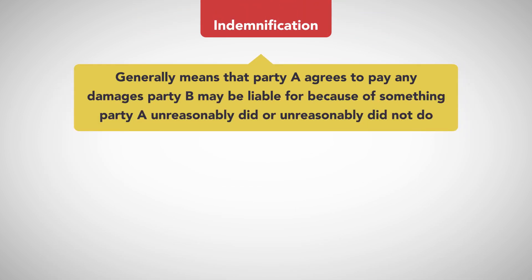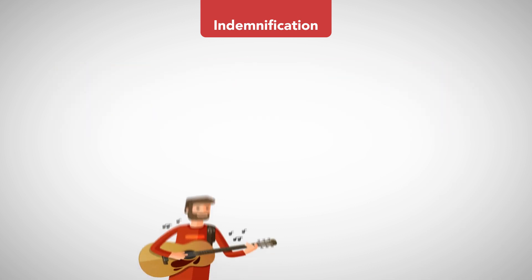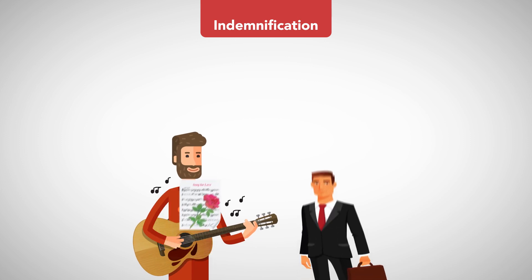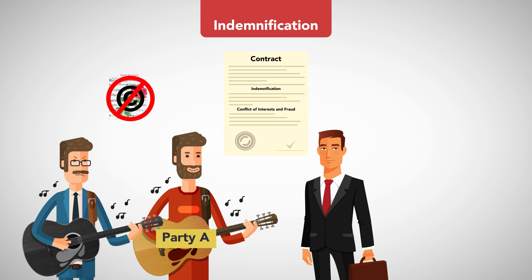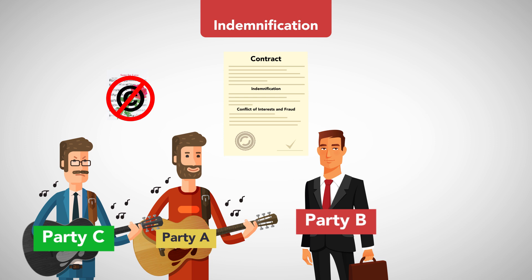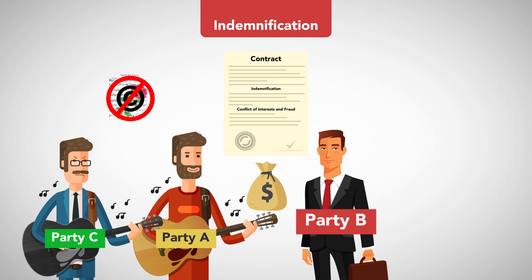Indemnification generally means that Party A agrees to pay any damages Party B may be liable for because of something Party A unreasonably did or unreasonably did not do. Here's an example: a songwriter writes a song and conveys the copyright to a music publisher in a contract that contains an indemnification provision. As it turns out, in the song conveyed, Party A has infringed the copyright of a third party C to another song. C sues Party B, the copyright owner, and wins the judgment. Party B turns to Party A for payment of the judgment because Party A agreed to indemnify Party B for just such claims. That is a normal indemnification situation.